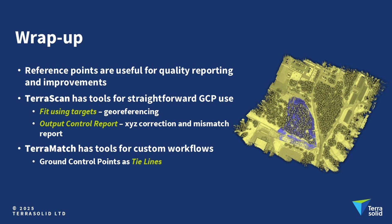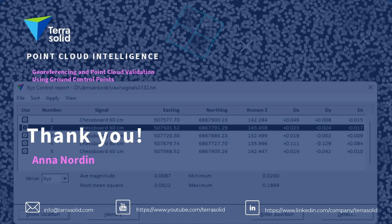To wrap up, ground control points are useful for improving point cloud accuracy and georeferencing. TerraScan has easier tools such as fit using targets and output control report. TerraMatch is good for larger scale data and enables a more custom workflow using the ground control points as tie lines. This was everything for this tutorial — thank you for watching.